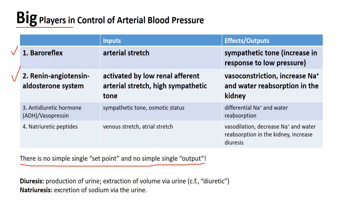Another example: you can set the thermostat in your house or apartment to a target temperature — that's a set point. In blood pressure control, there's no equivalent of a thermostat where the arterial pressure is set. In fact, all of these systems sense different things that are related to pressure, and they all have effects that influence pressure in different ways.